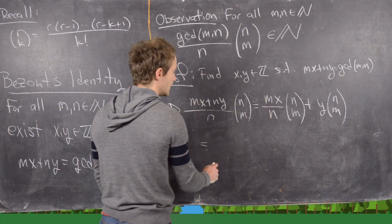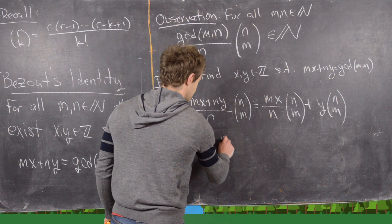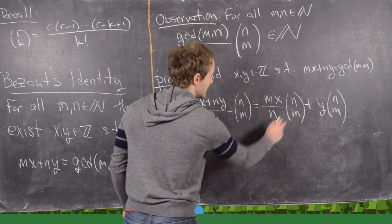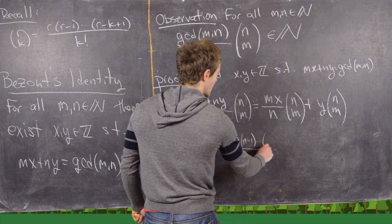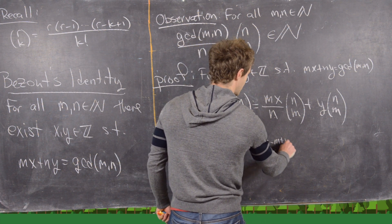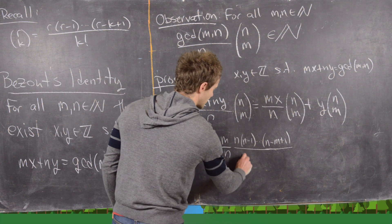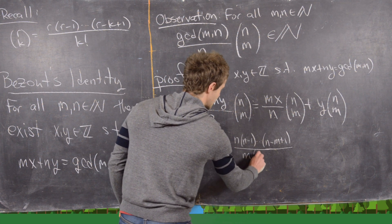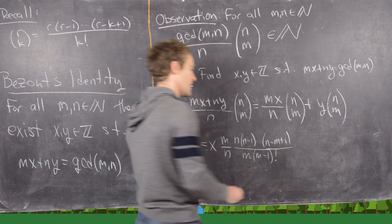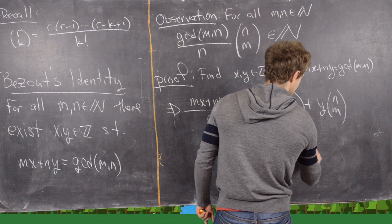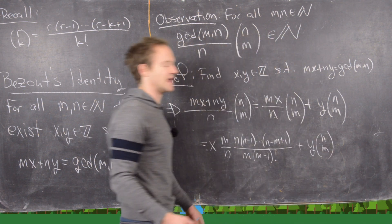Now let's just look at this part right here. So notice we can decompose this a little bit. This is going to be x times m over n and then the binomial coefficient will be n times n minus 1 all the way down to n minus m plus 1. And then in the bottom we have m factorial, but I'm going to go ahead and write that as m times m minus 1 factorial. And then this guy we're going to leave as is. So this is y and then the binomial coefficient n choose m.